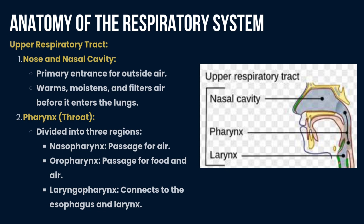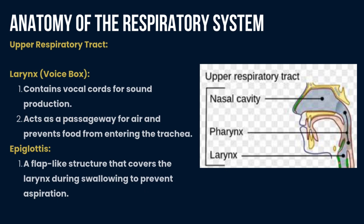The nasopharynx is a passage for air, while the oropharynx is a passage for both food and air. The third part is the larynx, called the voice box — it contains vocal cords for sound production, acts as a passageway for air, and prevents food from entering the trachea. Fourth is the epiglottis, a flap-like structure that covers the larynx during swallowing to prevent aspiration.